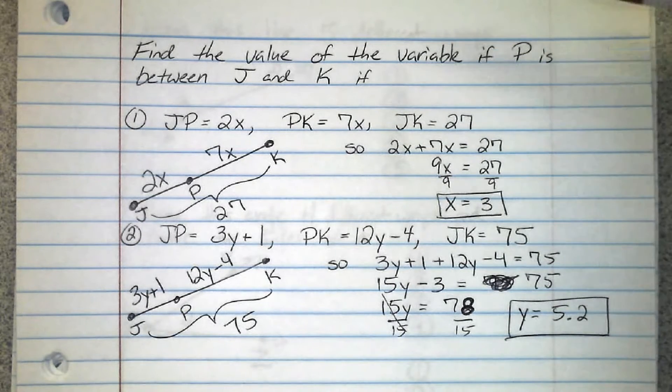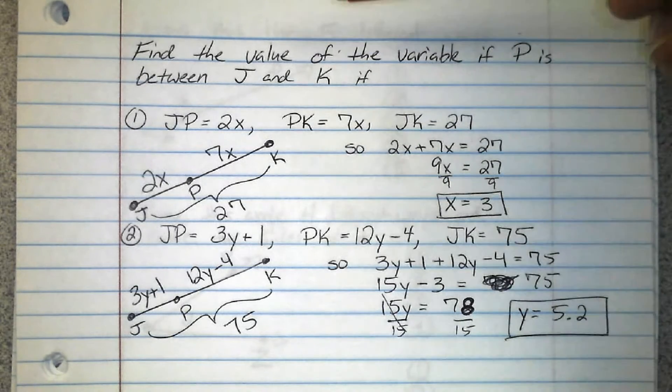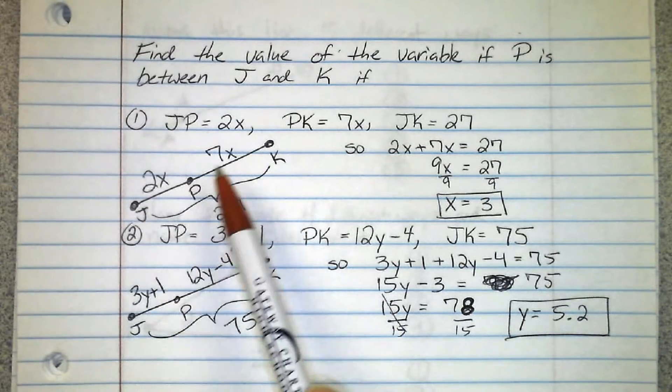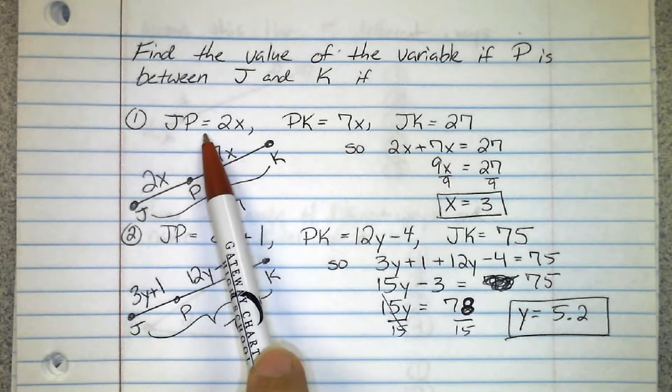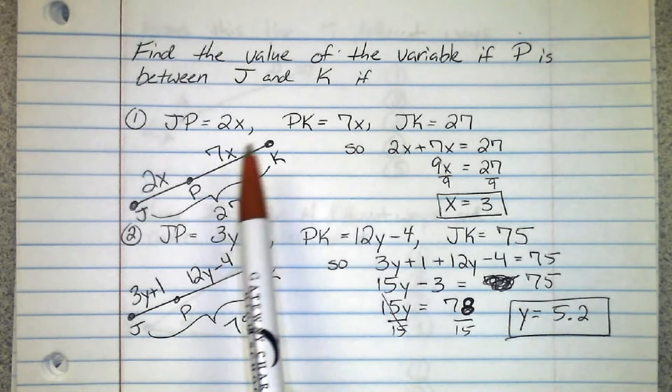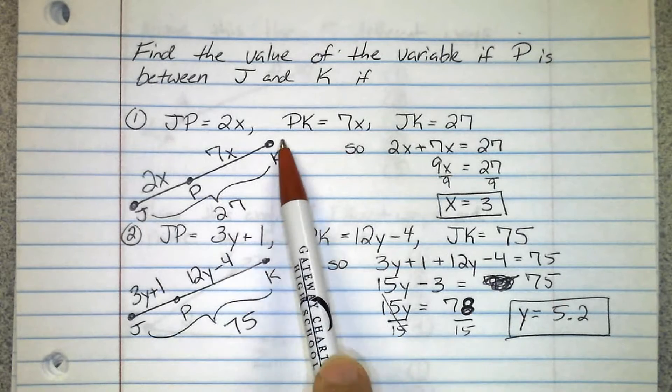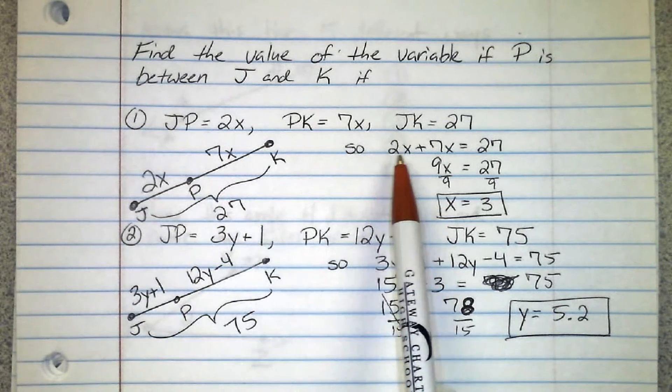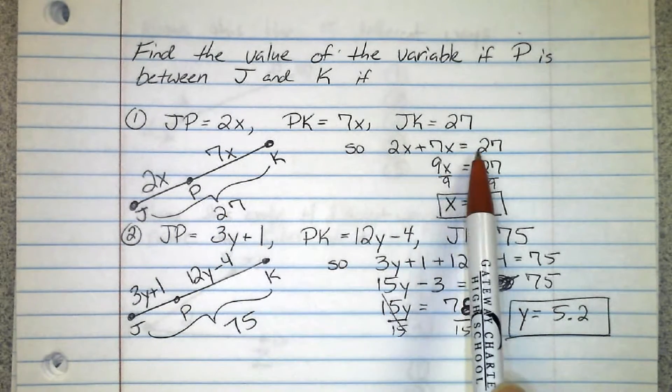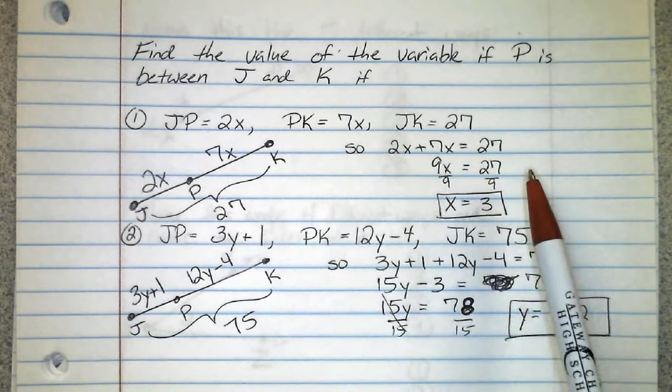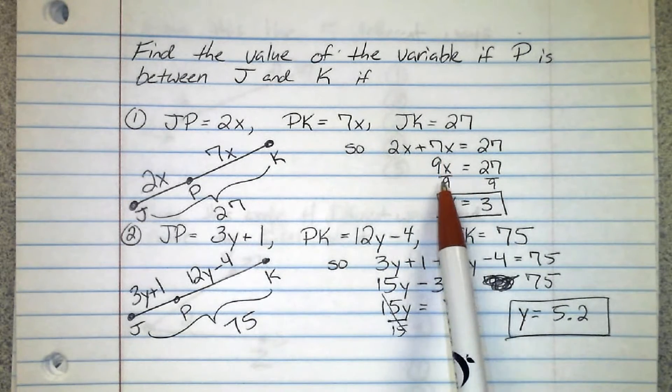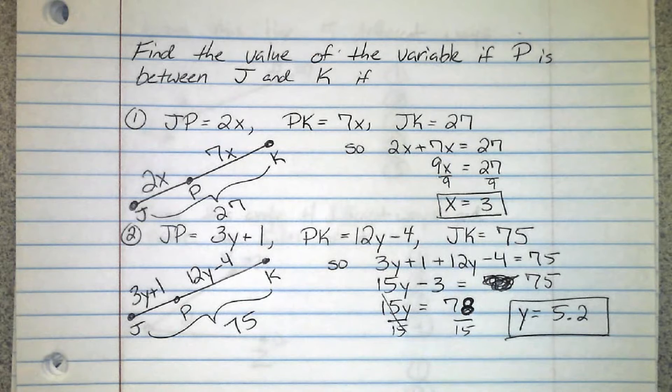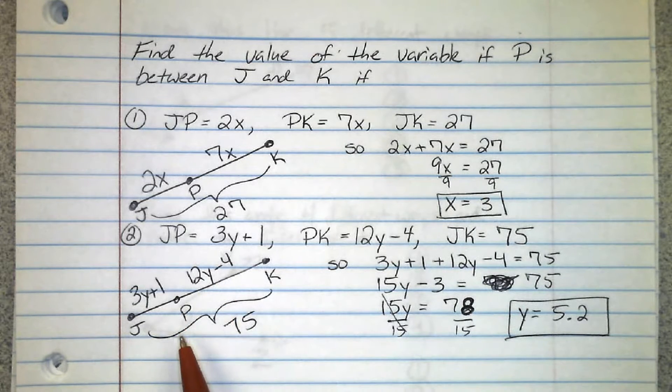Here are the answers for this one. For these questions they tell you that P is between J and K, so I recommend drawing a segment or line JK, put P somewhere between it. They tell you JP equals 2x, PK equals 7x, and the whole thing JK equals 27. So you know that this part plus this part equals the whole line, so we have 2x plus 7x equals 27. Now we solve: 2x and 7x like terms combine to 9x, 9x equals 27, divide both sides by the coefficient 9, we end up with x equals 3.